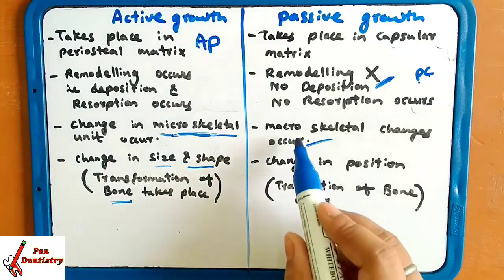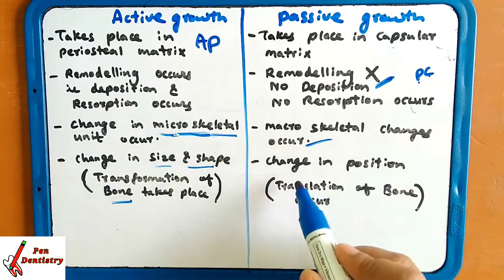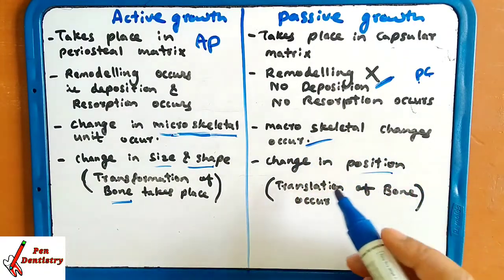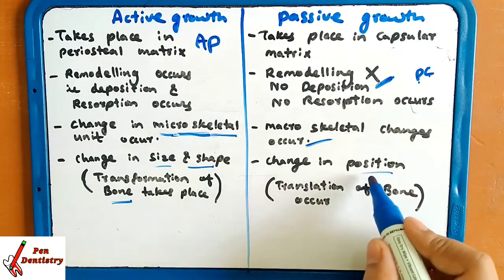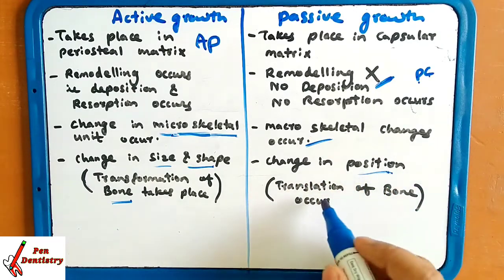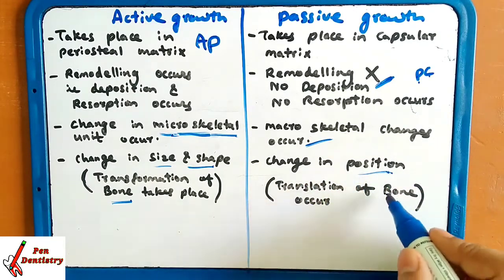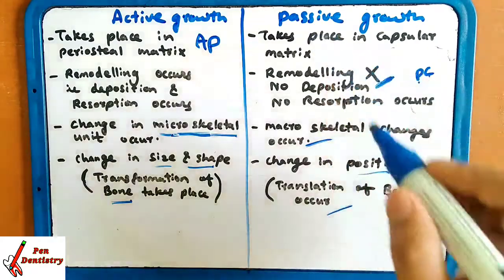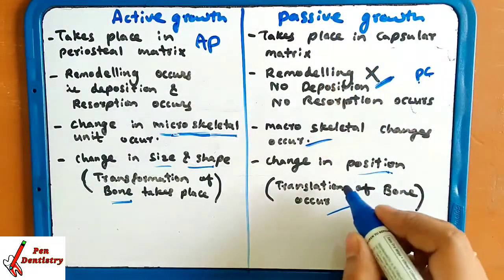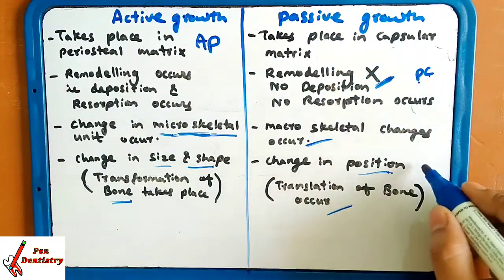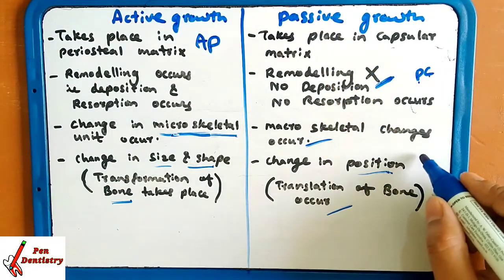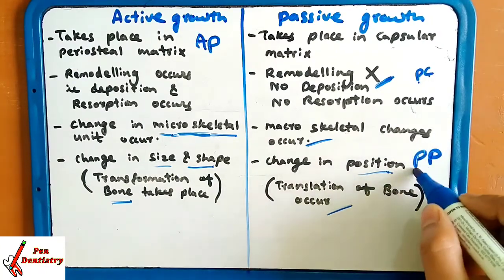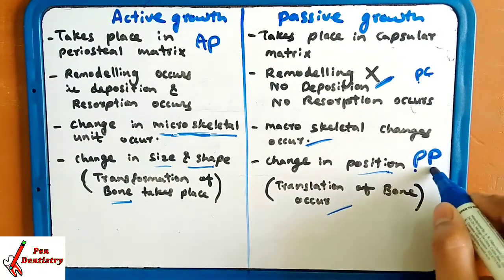Macroskeletal changes take place — that is position. Change in position of the bone takes place, that is translation of the bone occurs. Passive is PP — position. Passive growth is changing the position.